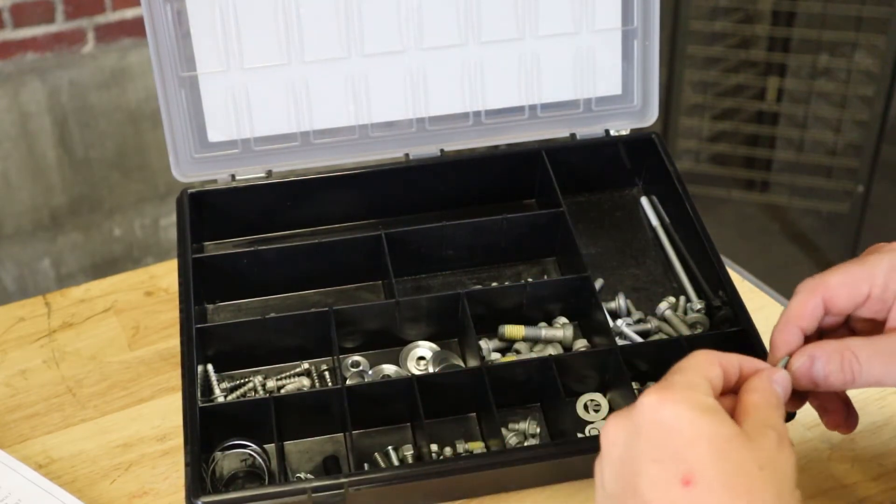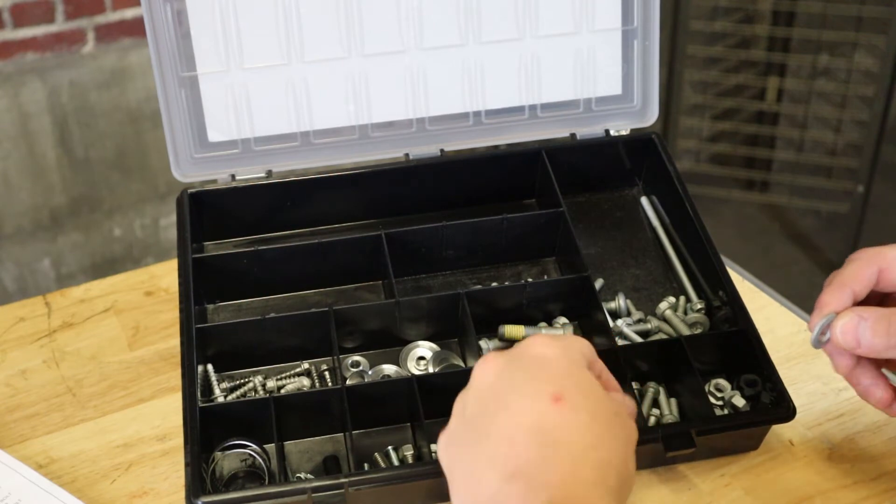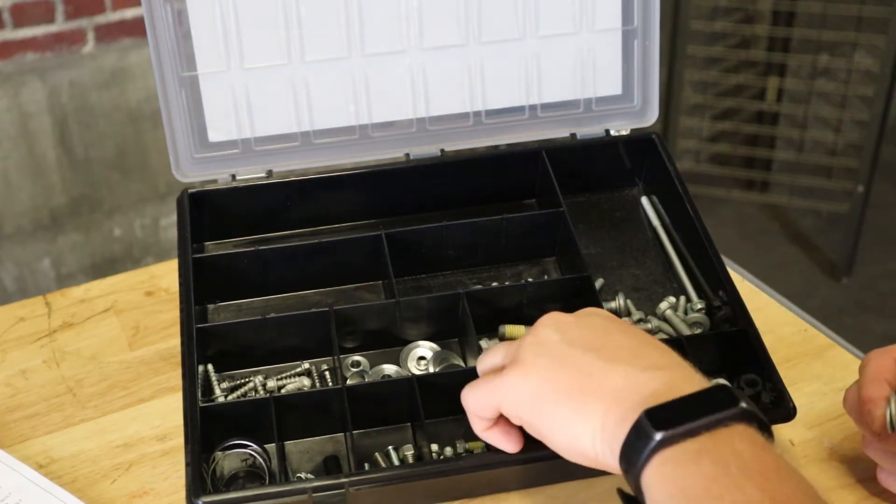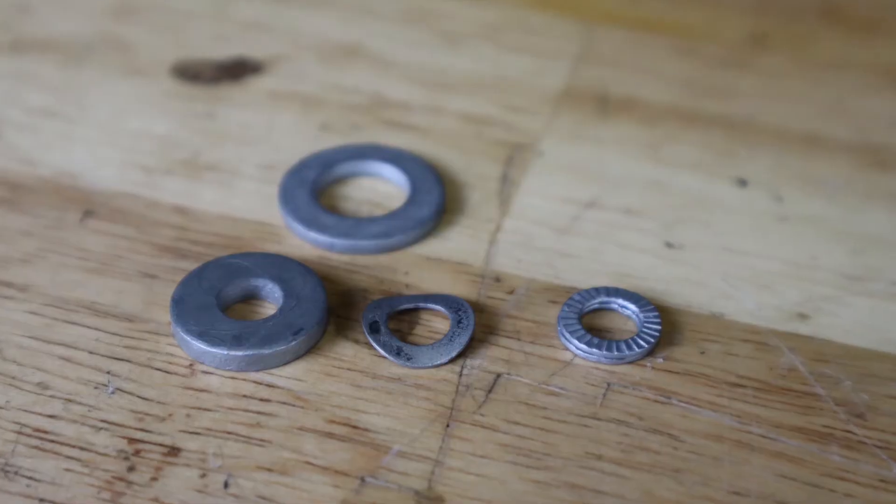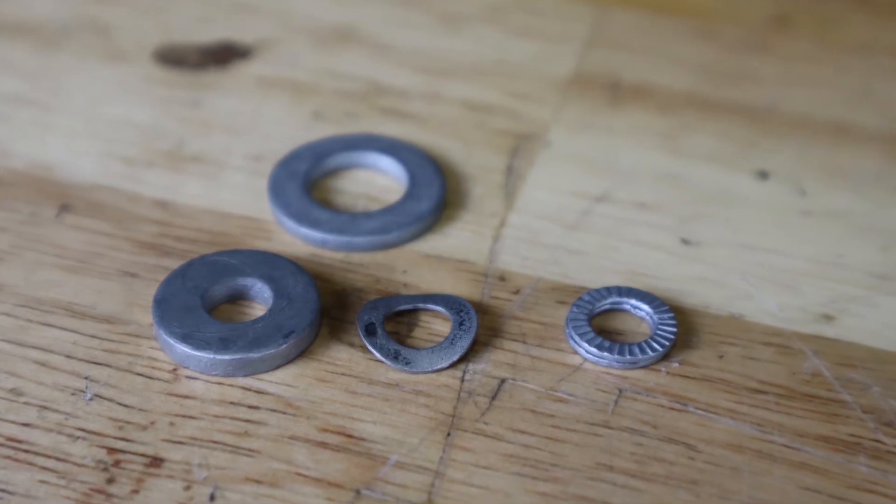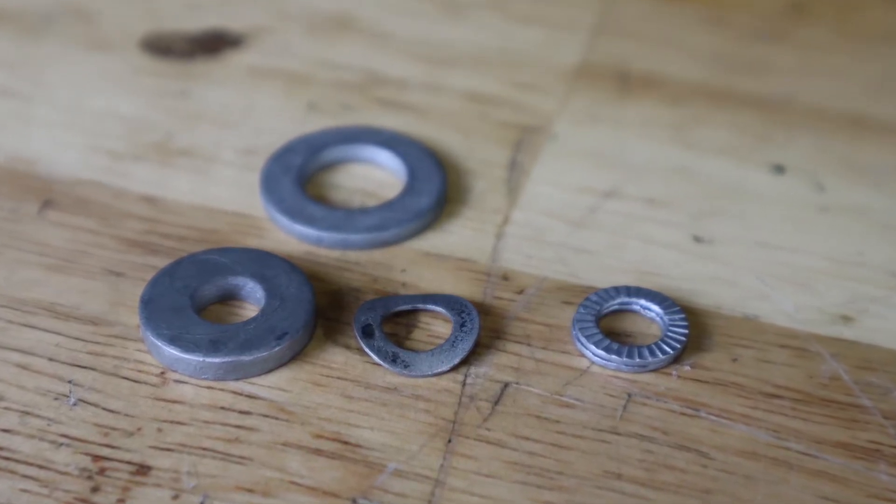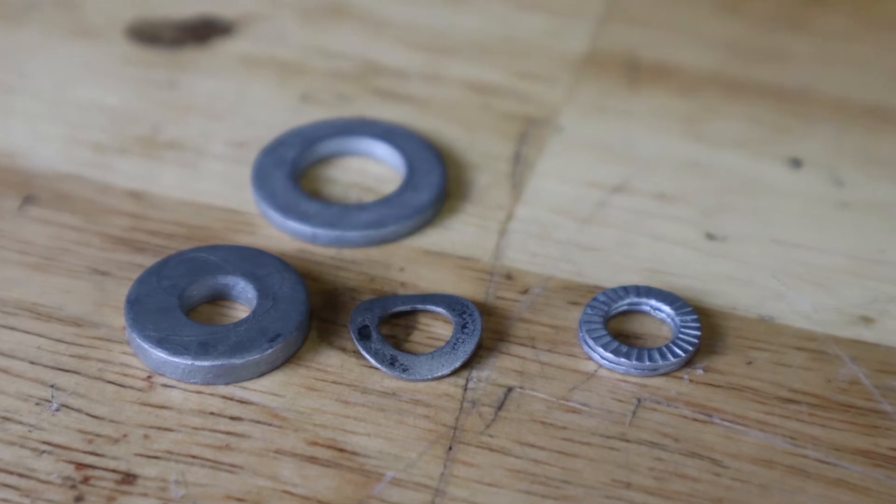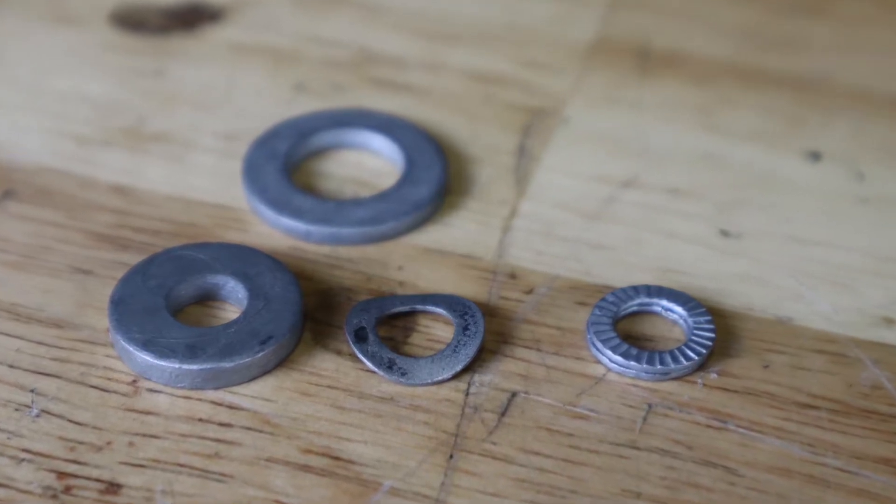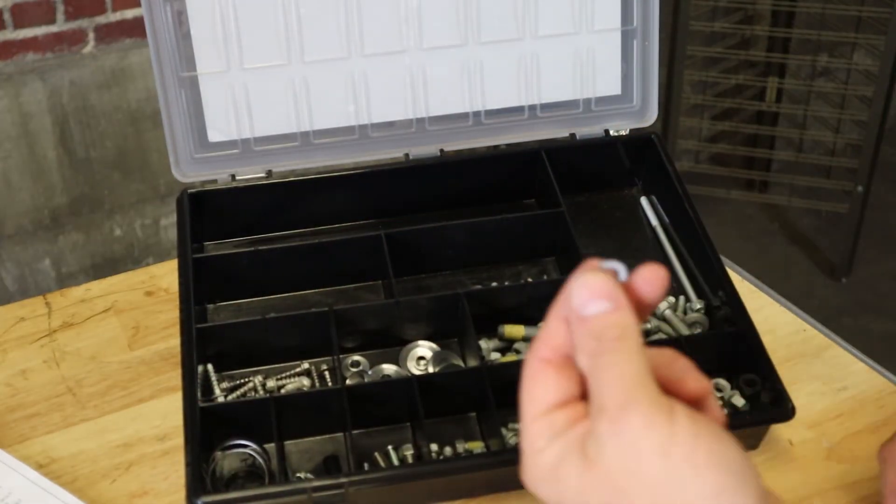Over here, we've got some washers, a few different sizes, three or four different sizes, and you have the Nord lock washers. These go on, these like hold the shifters on KTMs. You're probably not going to find that anywhere when your shifter falls off either. So you got some in this kit.